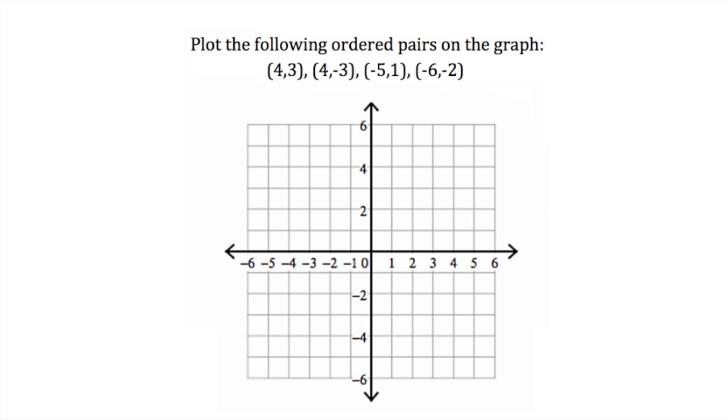In this problem, we are asked to plot the following ordered pairs on the graph. As you will see, there are four sets of ordered pairs, beginning with (4, 3), (4, -3), (-5, 1), and (-6, -2).